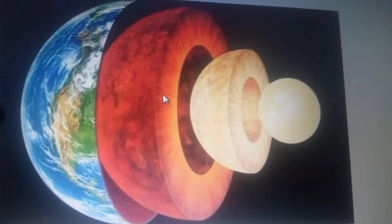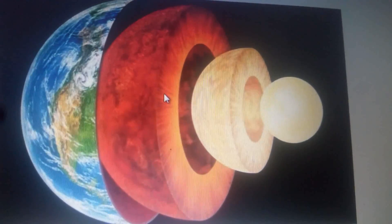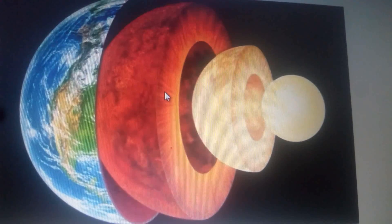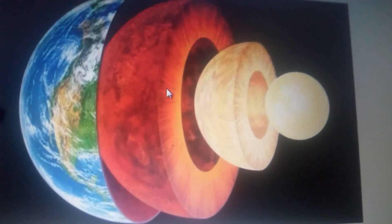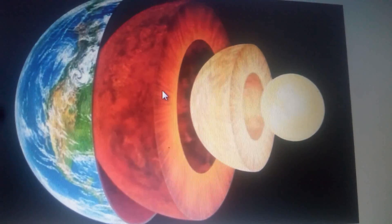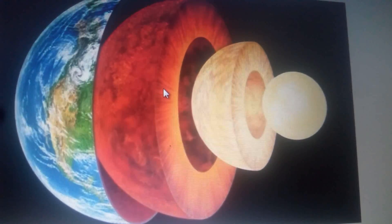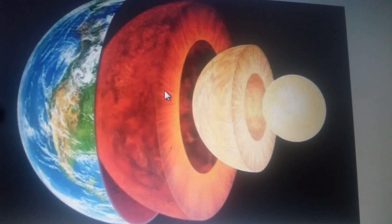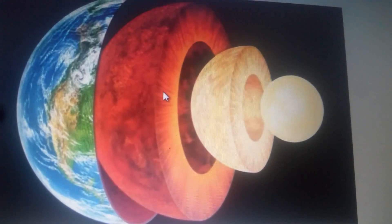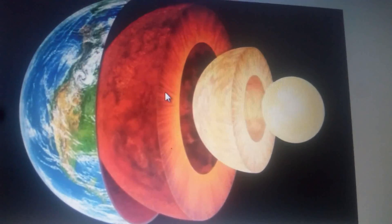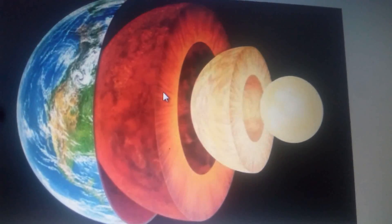The mantle contains about 70 percent of the Earth's mass. It is made up of rocks both in solid and in molten states. These rocks are said to be in a plastic state.